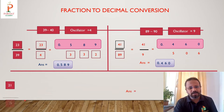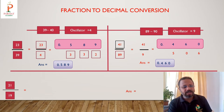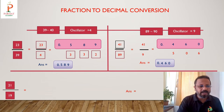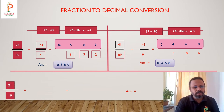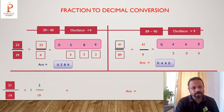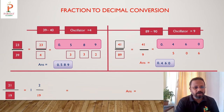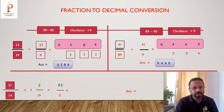Now we'll work with a mixed fraction: 21 upon 19. Here 19 is the denominator but it is less than the numerator, so we convert it to a mixed fraction: 1 and 2 upon 19. So 21 upon 19 becomes 1 and 2 upon 19; we keep the 1 aside and work with 2 upon 19.